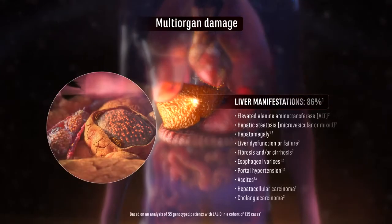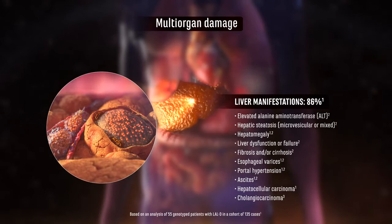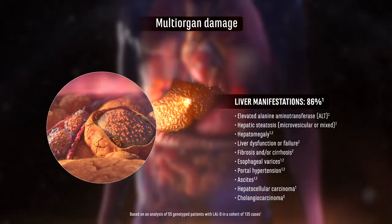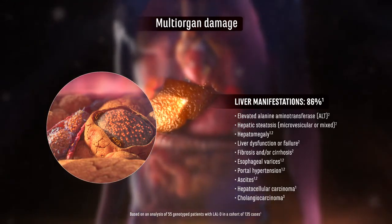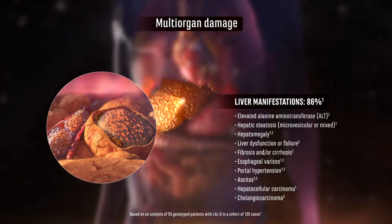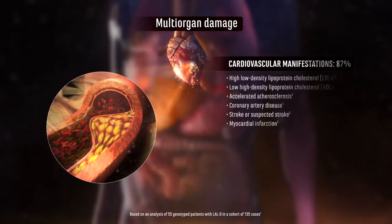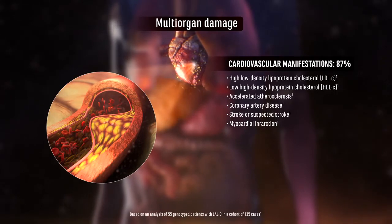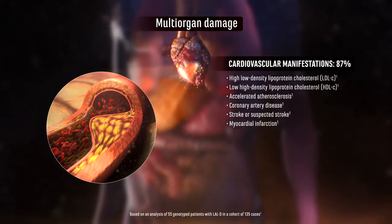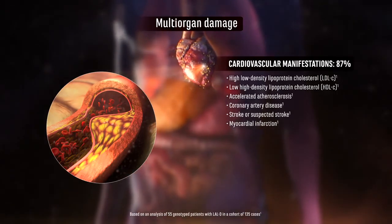Up to 86% of patients with LAL-D have exhibited liver manifestations, such as progressive fibrosis, cirrhosis, and liver failure. 87% exhibited cardiovascular manifestations, including dyslipidemia leading to accelerated atherosclerosis.